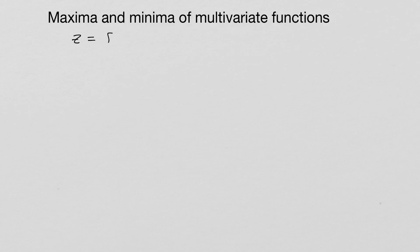Hello and welcome. Today we're going to talk about maxima and minima of multivariate functions. The idea here is we have z equals f of x, y, and this forms a surface — really a surface in 3D.